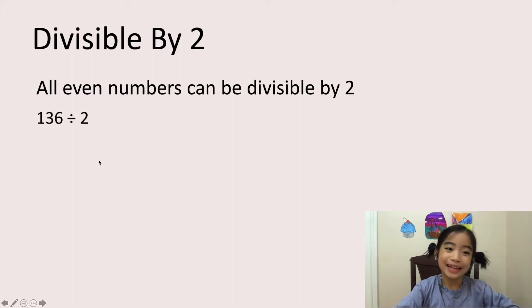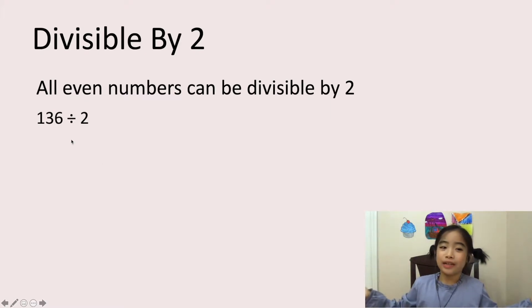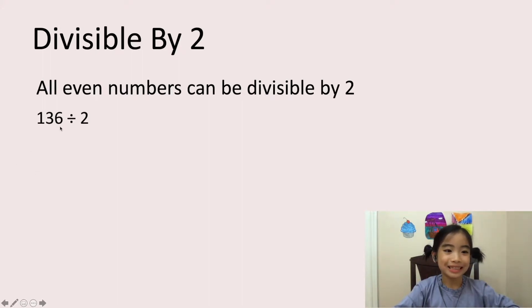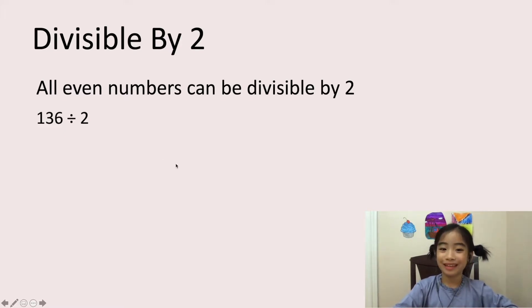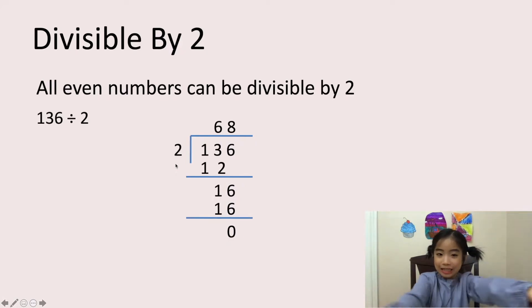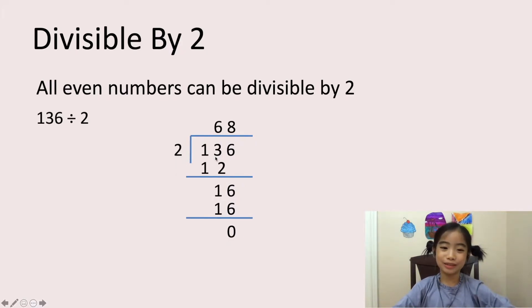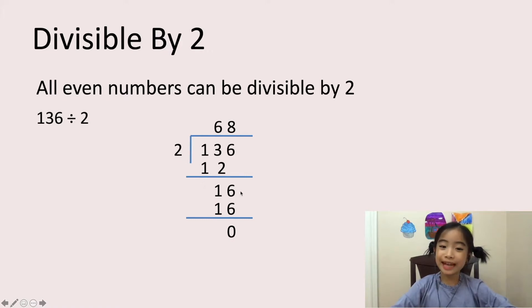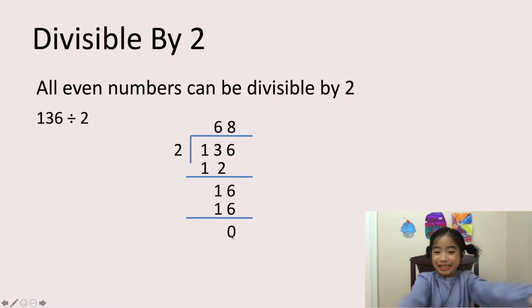Let's look at my example. Is 136 divisible by 2? Well, 136 is an even number, so it is divisible by 2. I can prove it with a long division. 2 can go into 13 six times. 2 times 6 equals 12. 13 minus 12 equals 1. Then we bring down the 6. 2 can go into 16 eight times, so 16 minus 16 equals 0. See, there is no remainder.